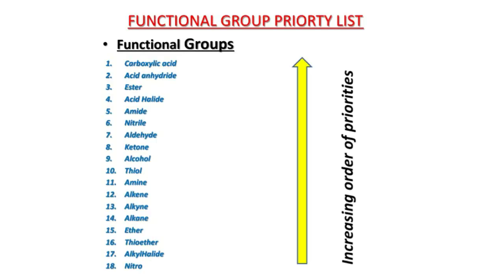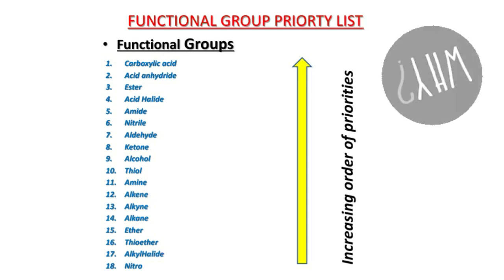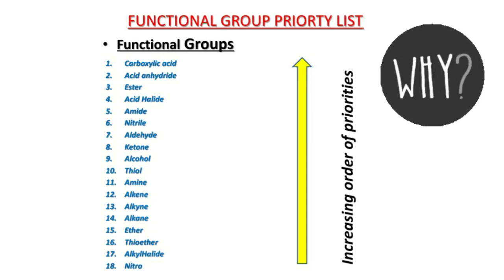To do this, you need what we call a functional group priority list. What you see on the screen now is a functional group list arranged from the most ranked to the least ranked. The lower the number, the higher the rank, and the higher the number, the lower the rank. There are lists for functional group priorities available, but this video is here to help you memorize them.